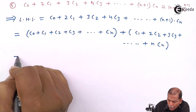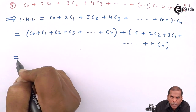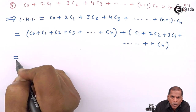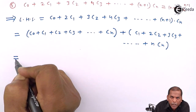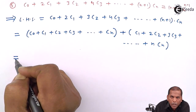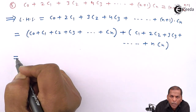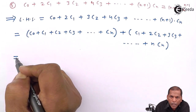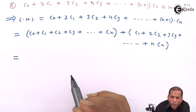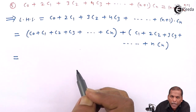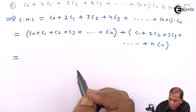For the first bracket, by using Result 1, that is C₀ plus C₁ plus C₂ plus C₃ plus dot dot up to Cₙ equals 2 raised to n, we evaluate the first bracket as 2 raised to n.